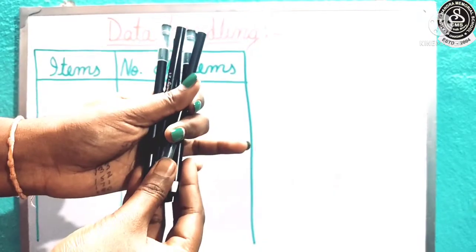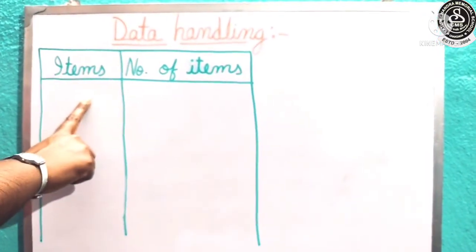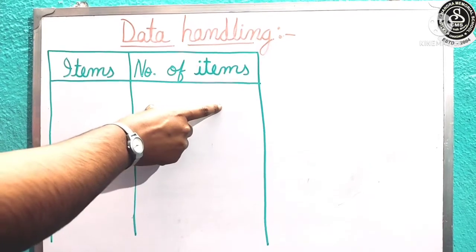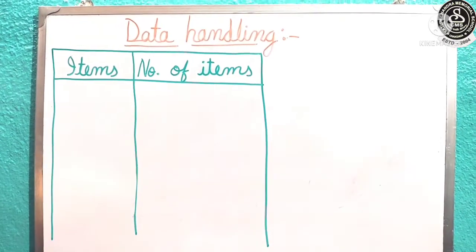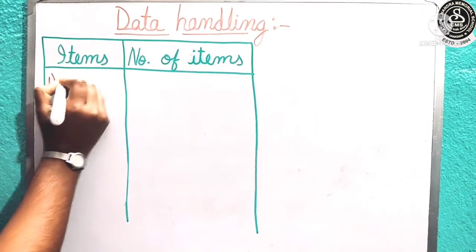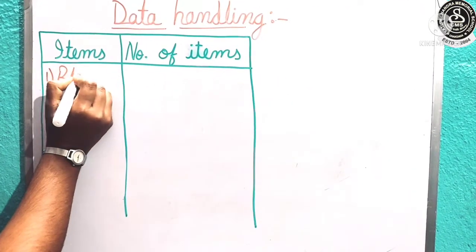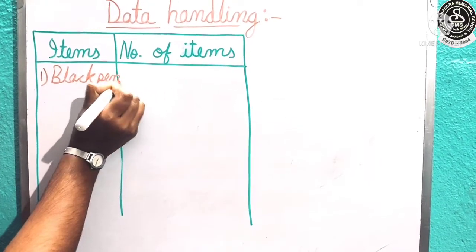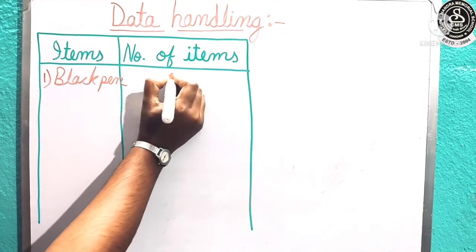Let us write what we get. First item name, that is black pen, and here in number we are going to write. Number 1 item we get black pen, and what is the number? 5.